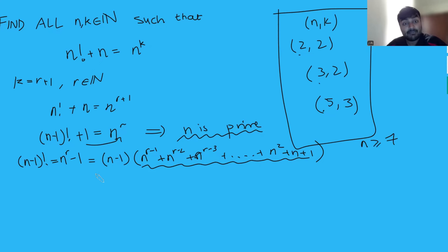In particular, n minus 1 will not be 0. So, therefore, I can divide both sides by that n minus 1. On the left-hand side, I get n minus 2 factorial. On the right-hand side, I just get n to the r minus 1 plus n to the r minus 2 plus n to the r minus 3, and so on, all the way up to n squared plus n plus 1.